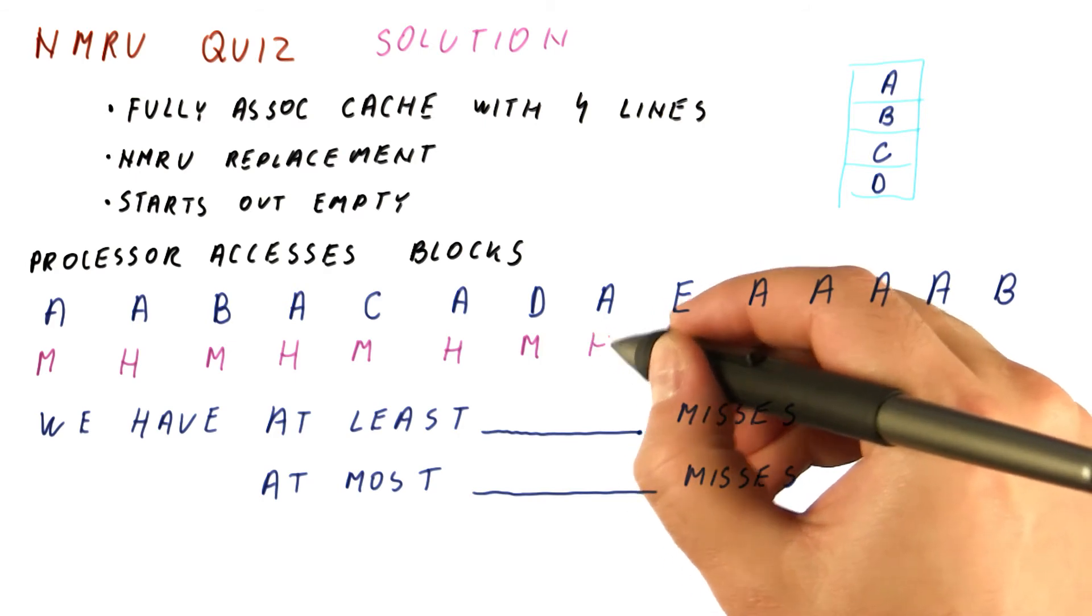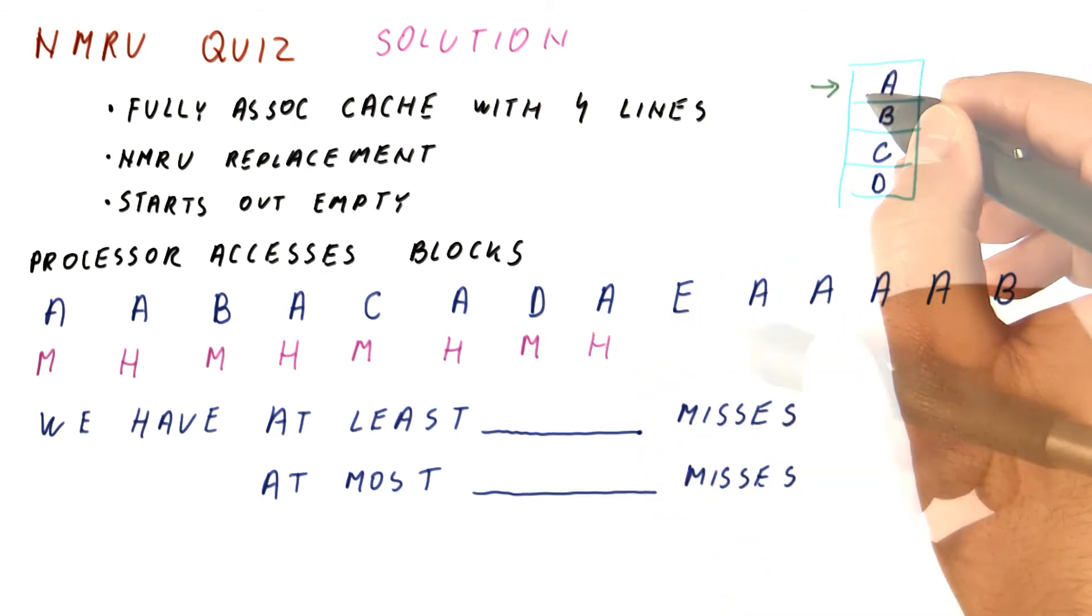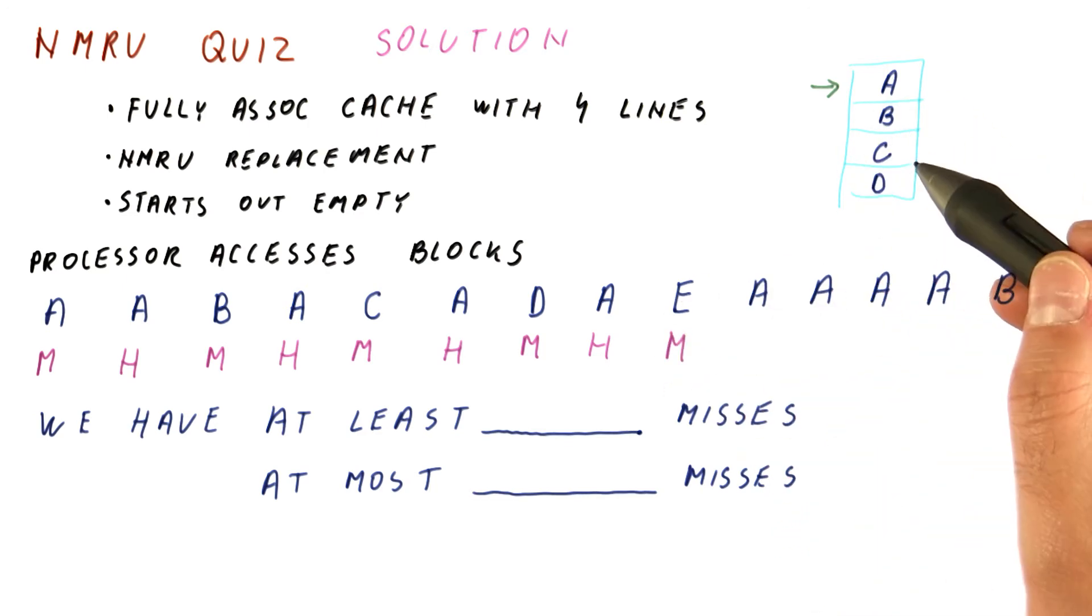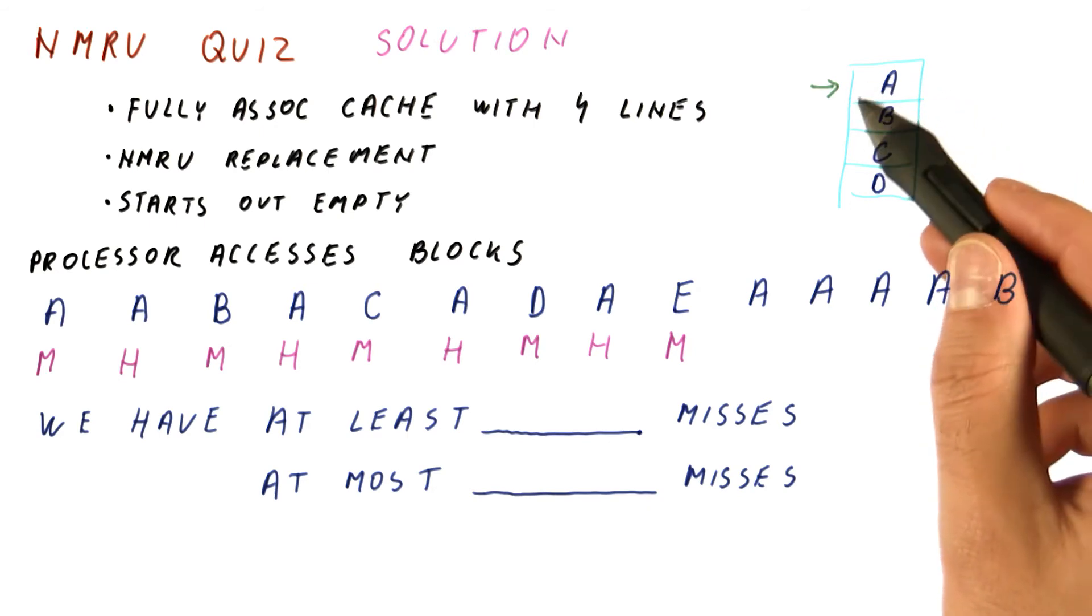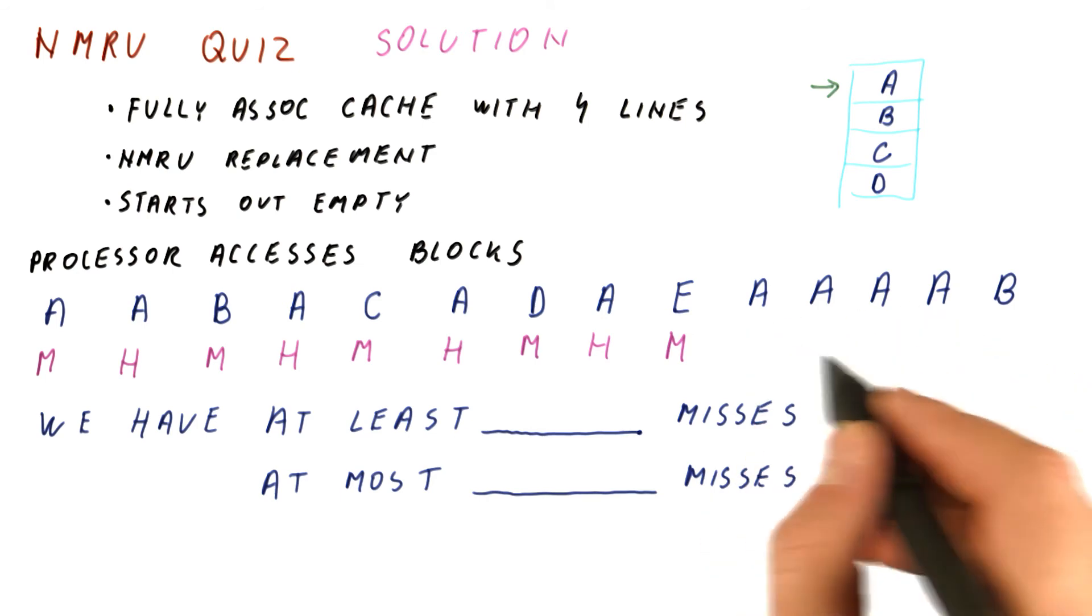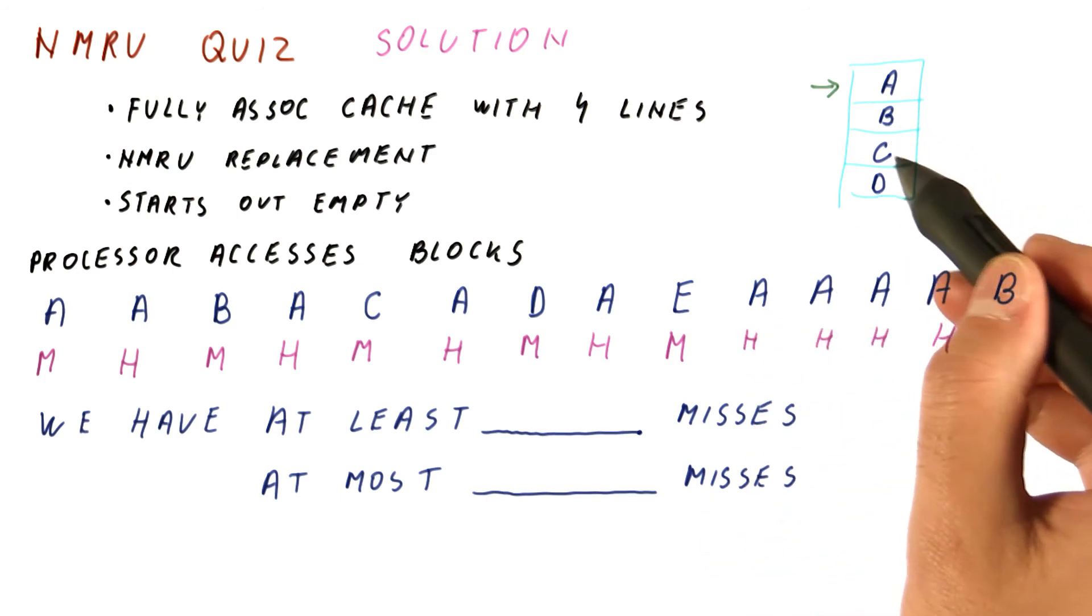Then A gets accessed and we have a hit. And at this point, A is the most recently used block. Now we will have a miss on E, because it's not in the cache. And now the question is, what will be evicted? We will definitely not evict A. So we know that the next four accesses to A will be all hits. E will be replacing one of these three blocks.